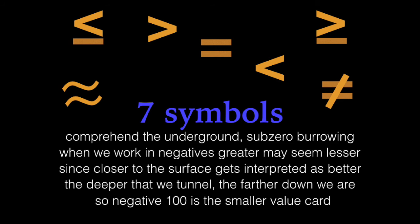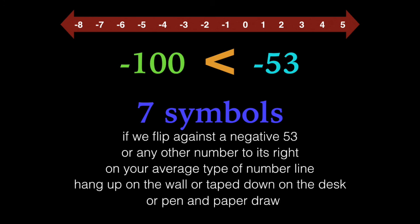Comprehend the underground, sub-zero barrel win. When we work with negatives, greater may seem lesser. Since closer to the surface gets interpreted as better, the deeper that we tunnel, the farther down we are. So negative 100 is a smaller value card.